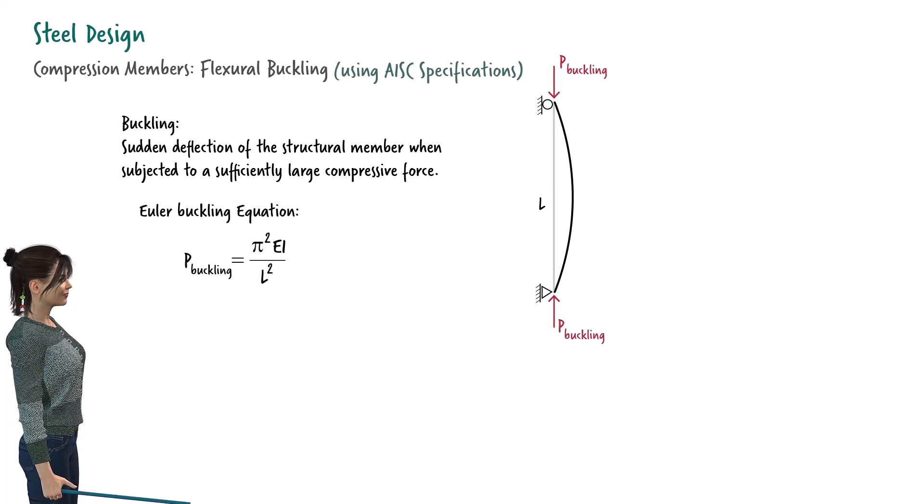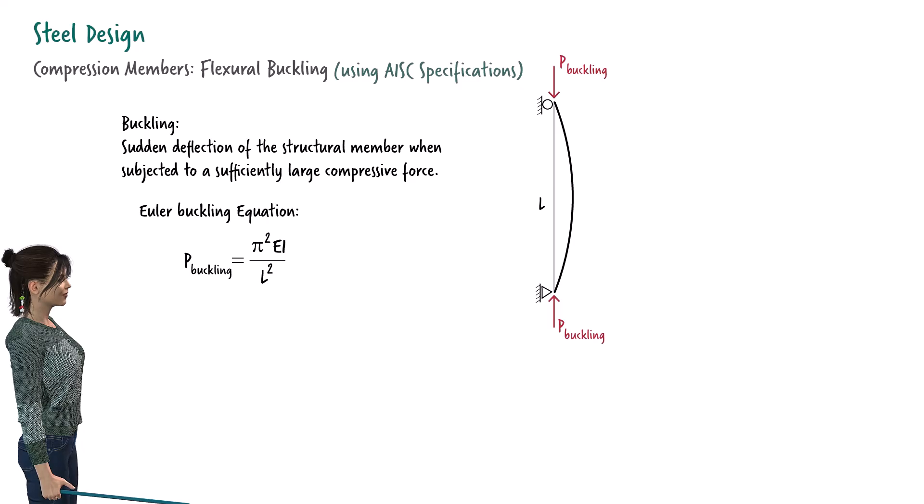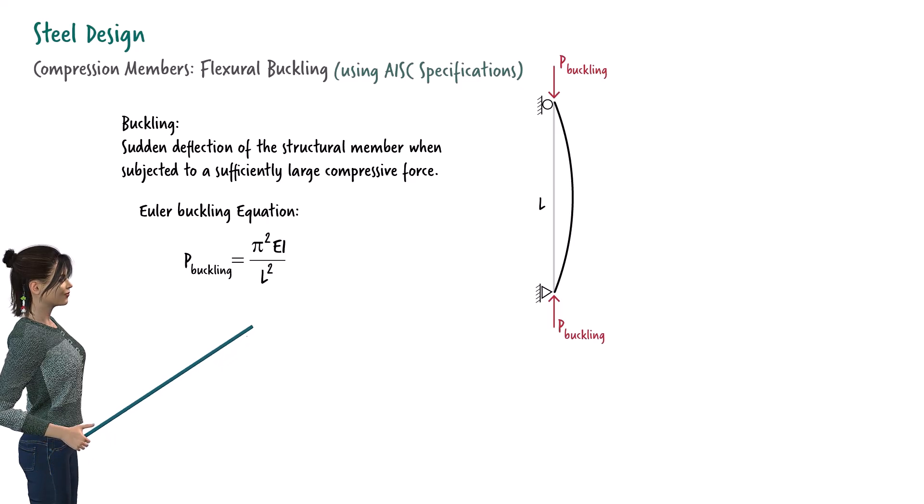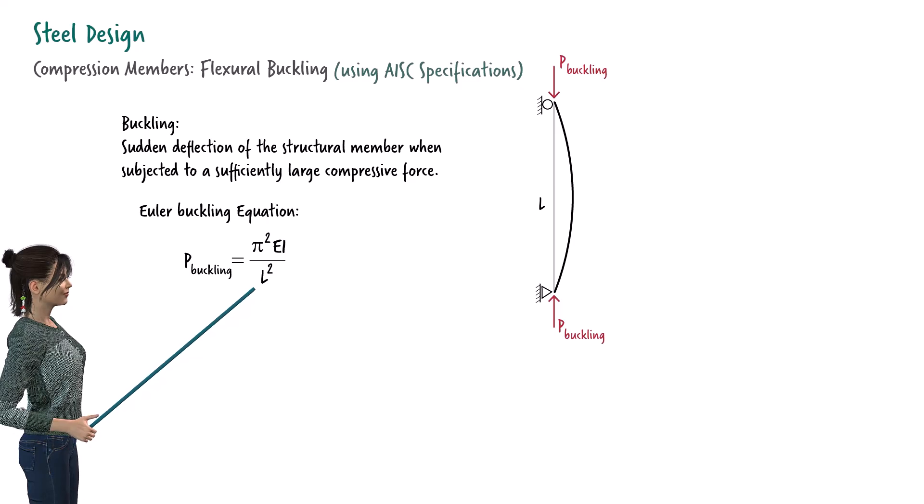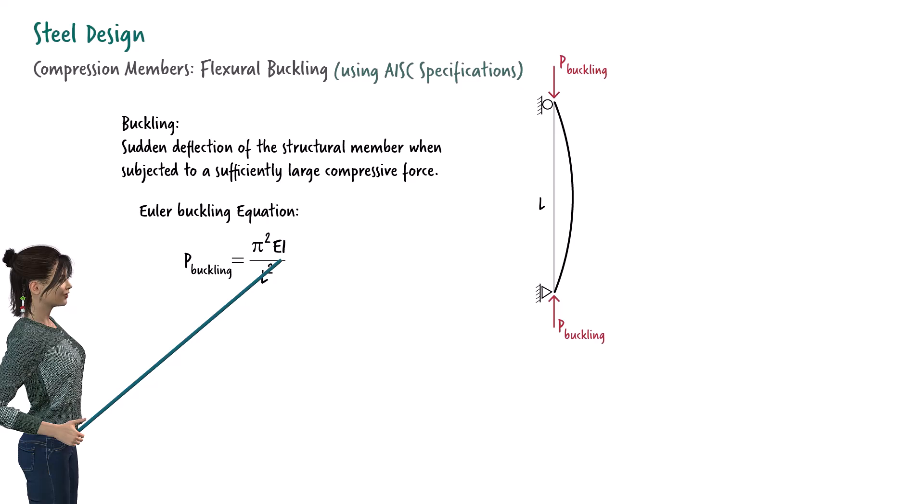Using the famous Euler-Buckling equation, we can determine the magnitude of the force that causes buckling. In this equation, L is the length of the member, I is the moment of inertia of the beam's cross-section, and E is the material's modulus of elasticity.